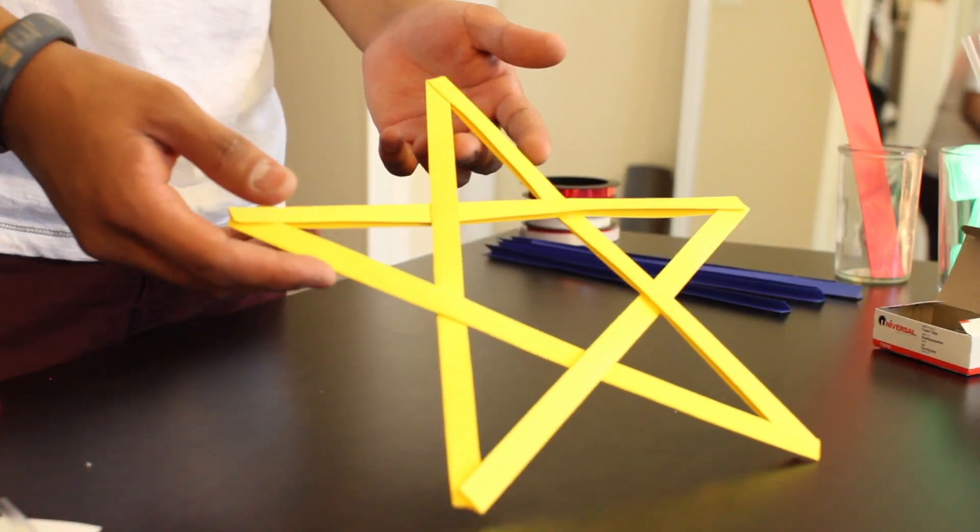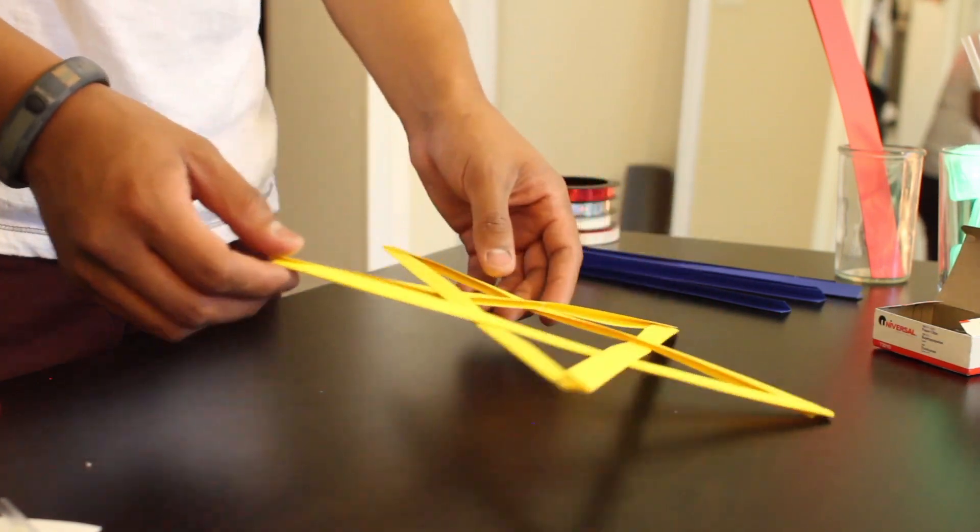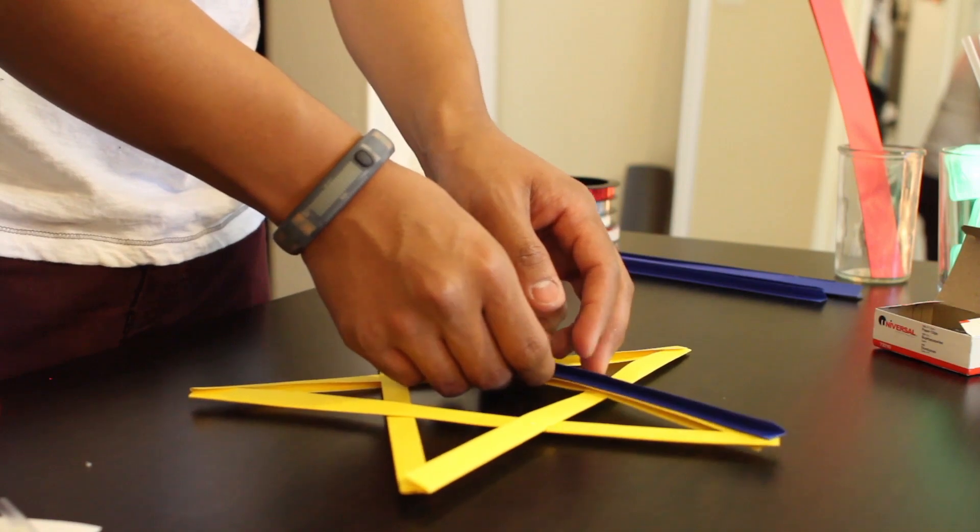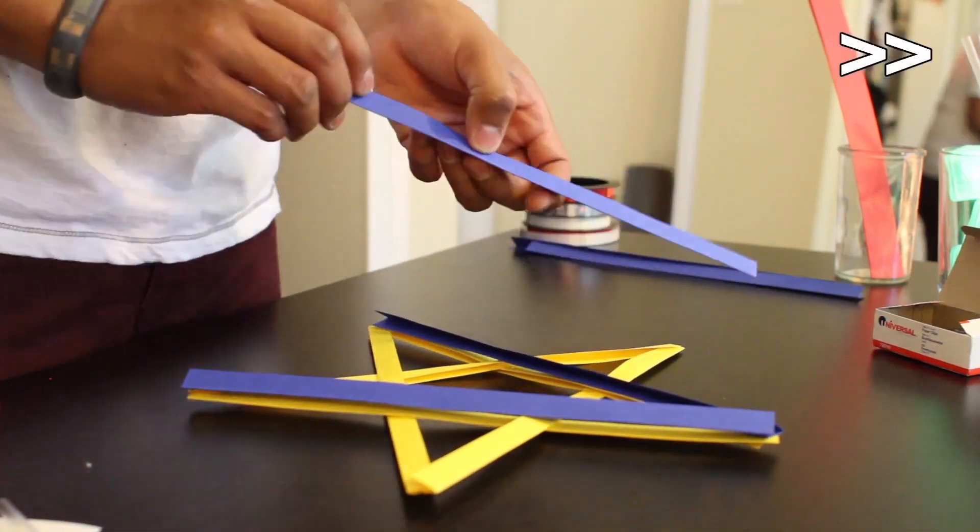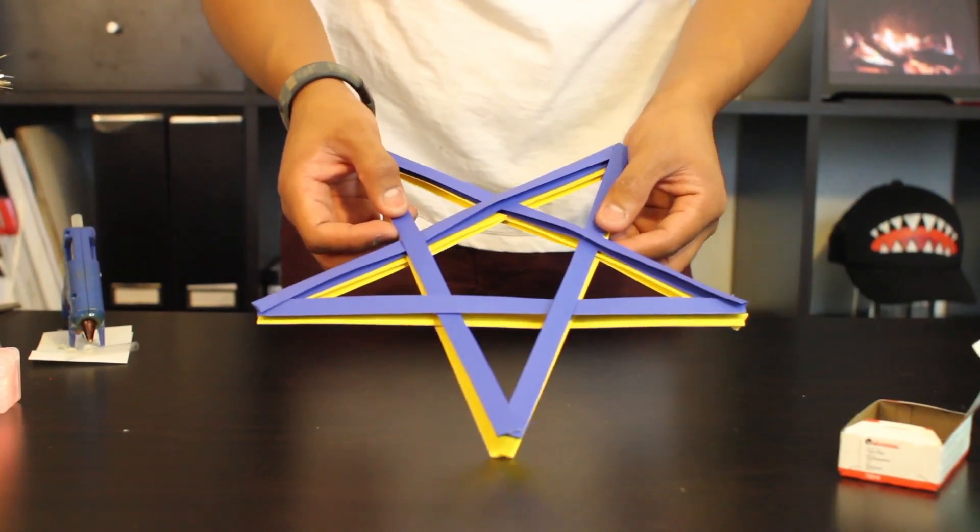Once your star has cooled and dried, use this as a template to create an identical copy with the other five pieces.